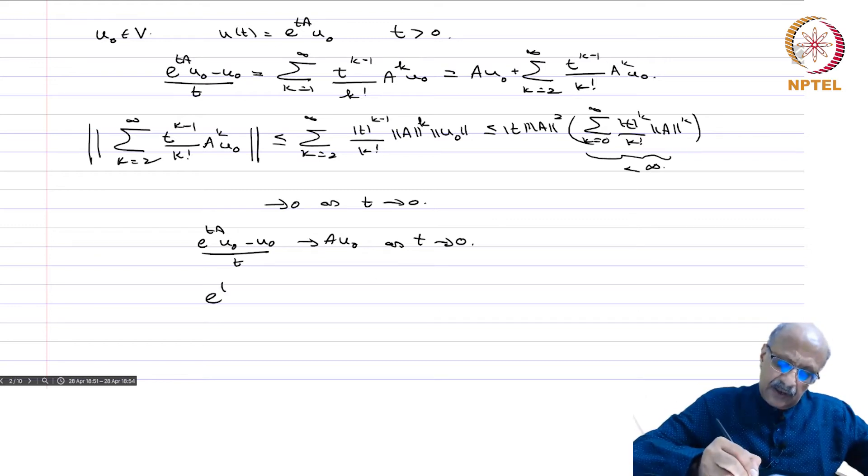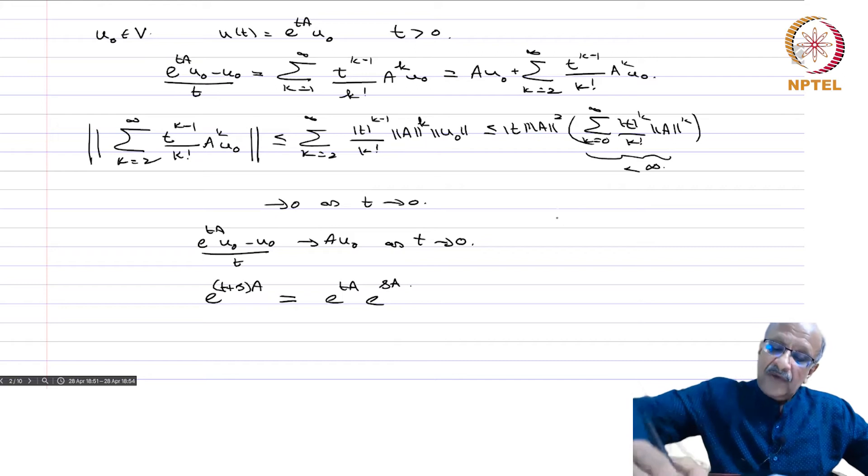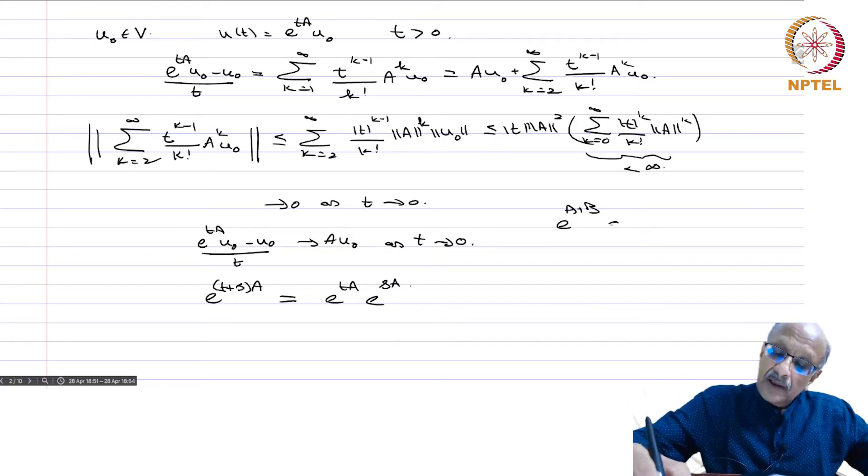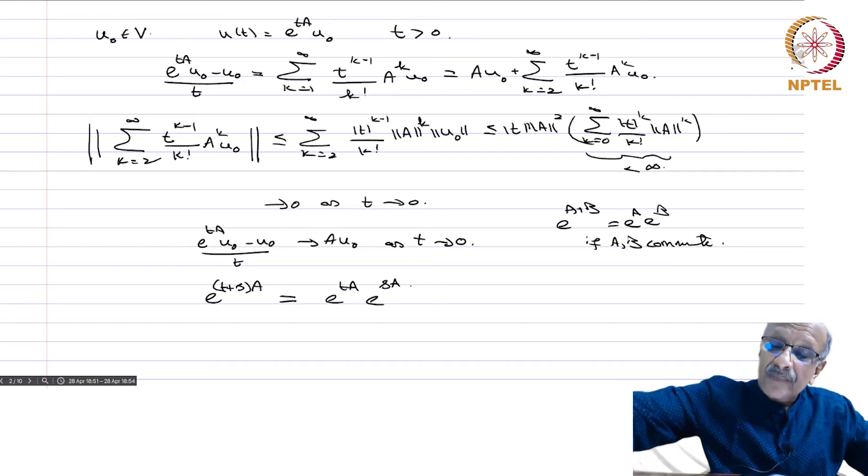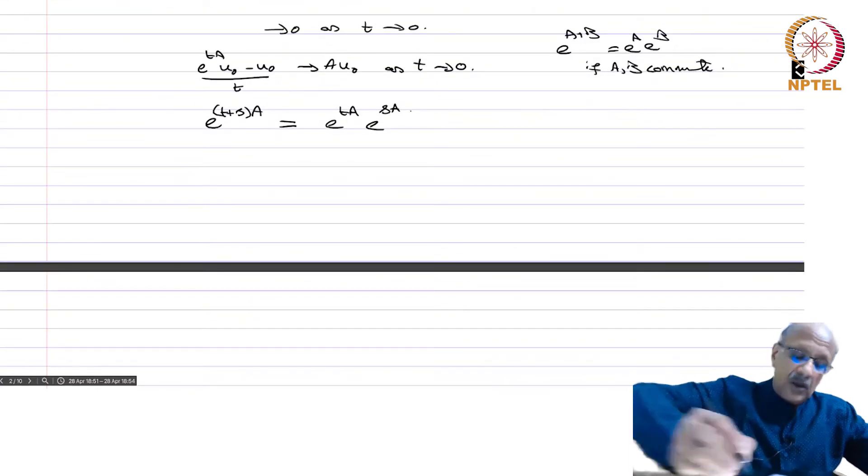Now, e^(t+s)A, it is easy to check that this is e^(tA) times e^(sA). In fact, e^(A+B) equals e^A e^B if A, B commute. This is important; otherwise it is not true. So tA and sA always commute, and therefore there is no problem. This commutes and therefore you have this. This you just check exactly as in the exponential series of a real variable. There is nothing really different, and therefore you have the same proof.